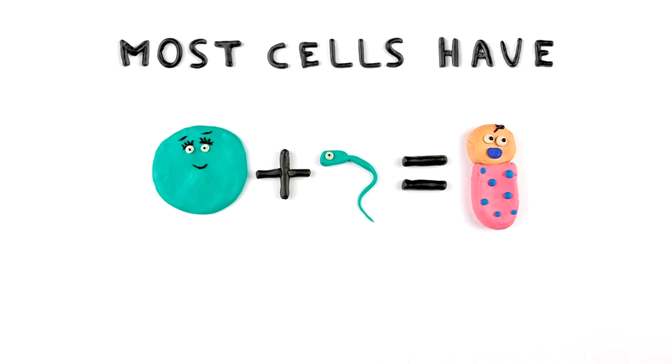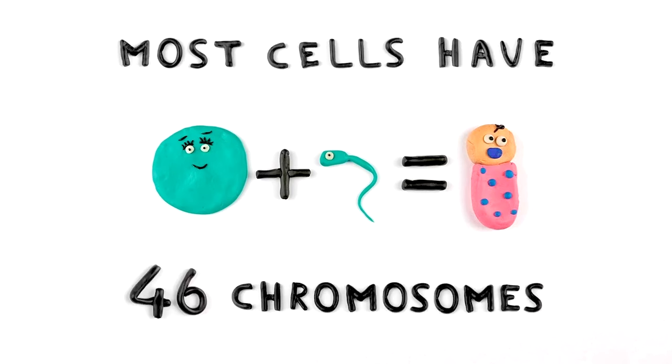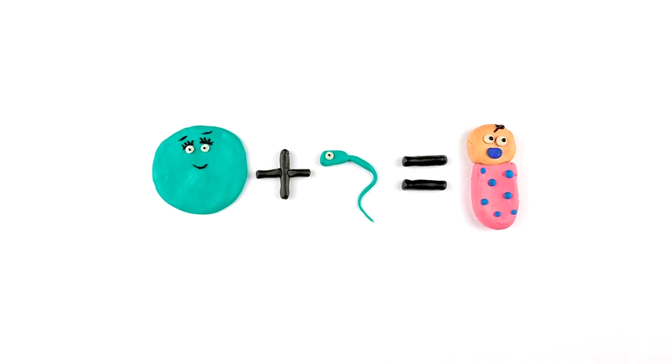Most cells in the human body have 46 chromosomes, but sex cells only need half this number. That way the new baby gets 23 chromosomes from its mother and 23 chromosomes from its father to form a full set.